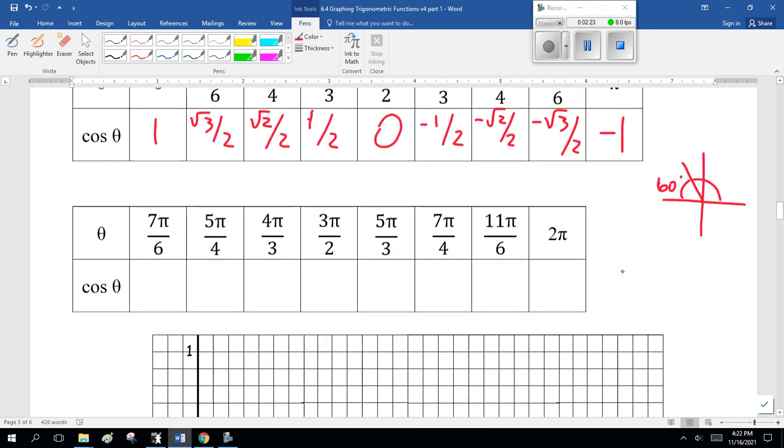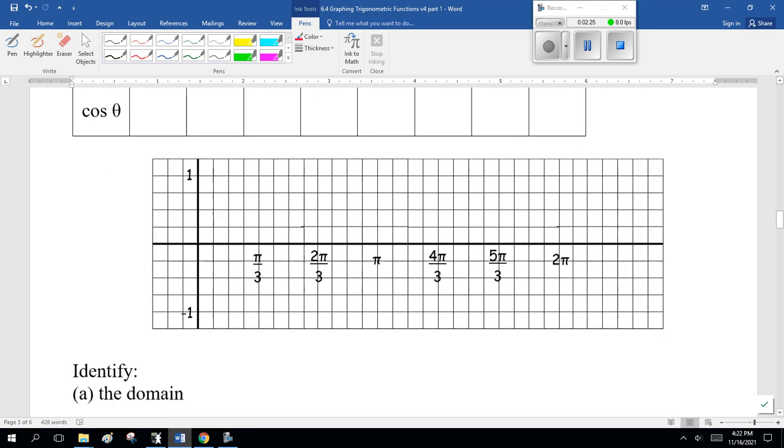Now, here, putting these points on the graph. Now, 1, 2, 3, 4, 5, 6, 7, 8, 9, 10, 11, 12. I went through this a little too quickly in the first video, and I apologize. Each one of these lines is 1 12th pi. So, pi over 6, or 2 pi over 12, is here.